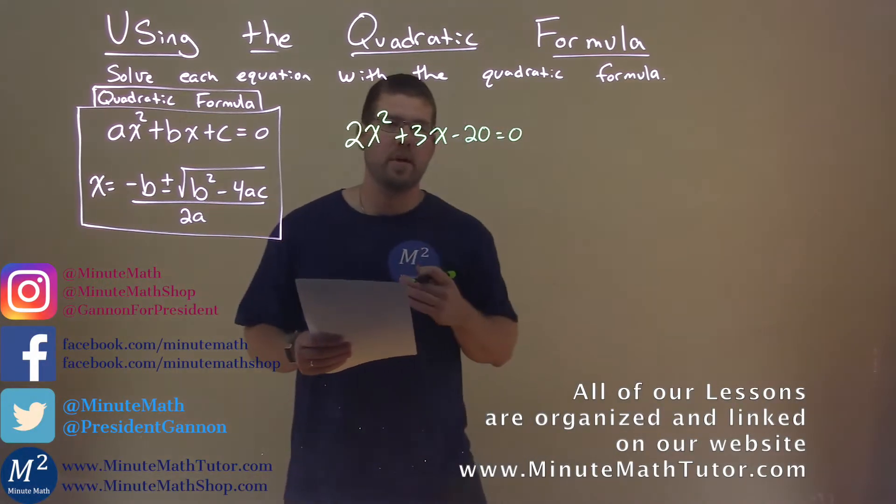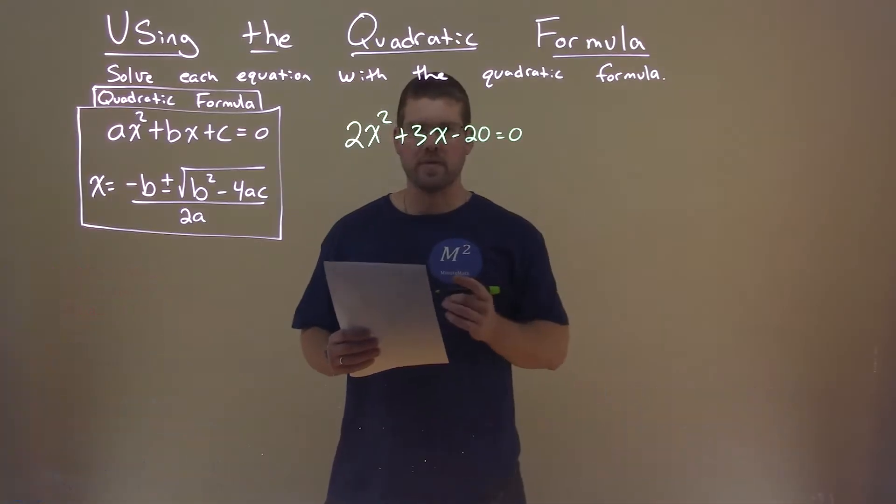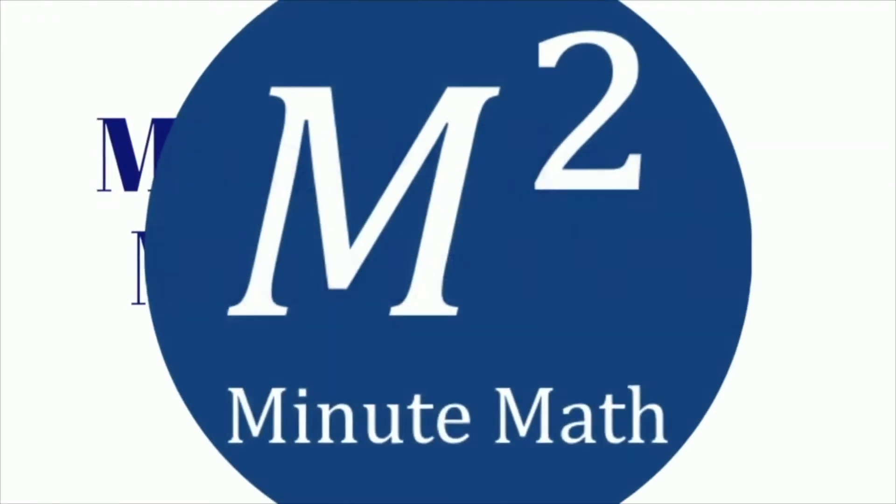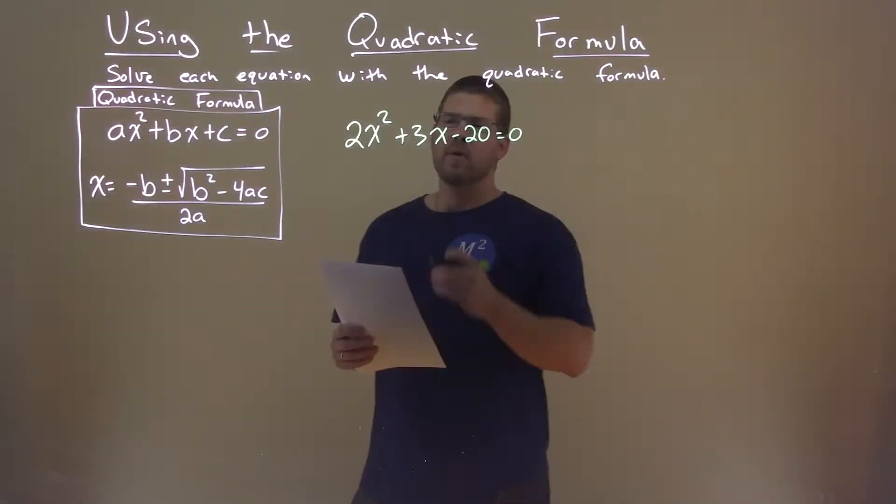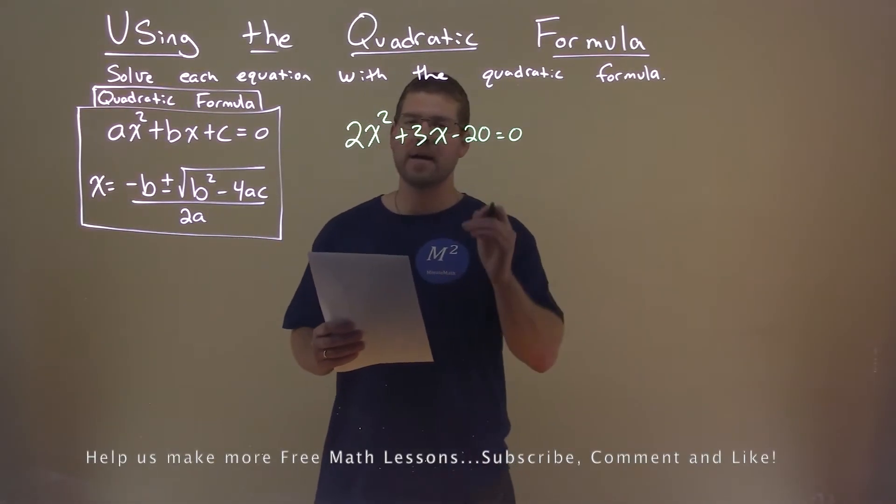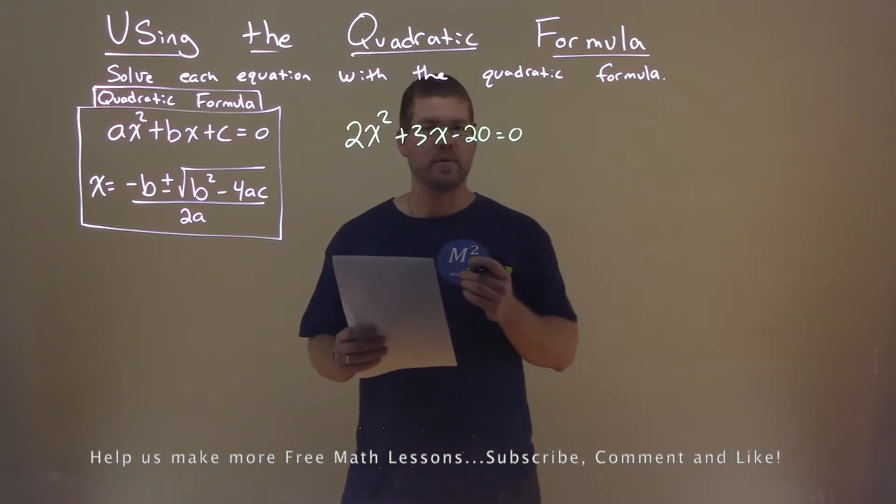Hi, I'm Sean Gannon and this is Minute Math. Today we're learning about using the quadratic formula. We're given this problem: 2x² + 3x - 20 = 0, and we want to solve this using the quadratic formula.